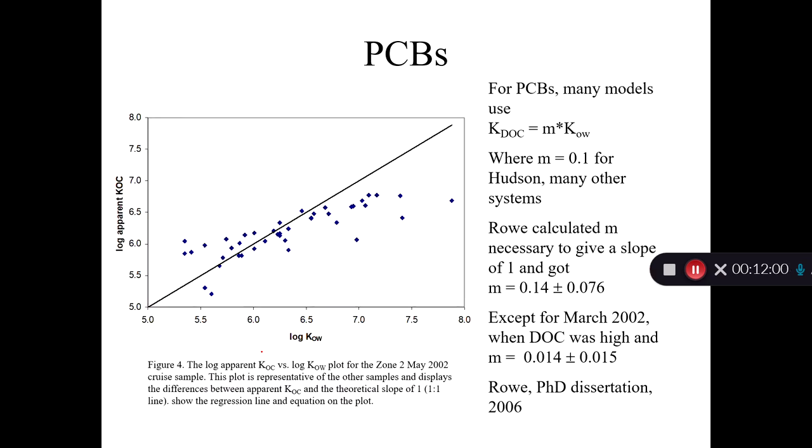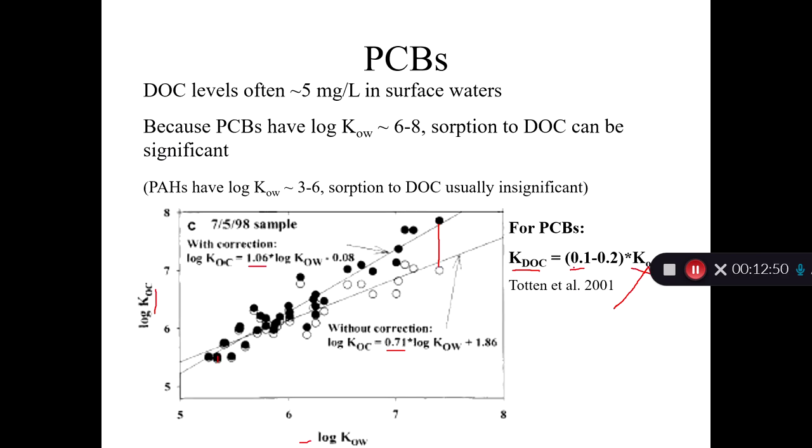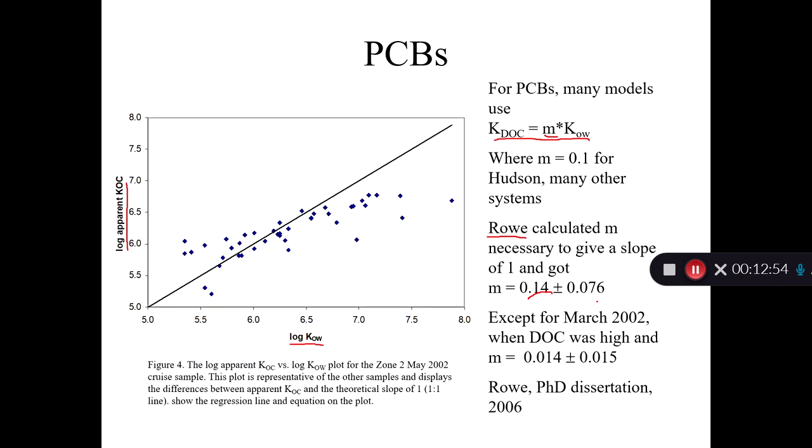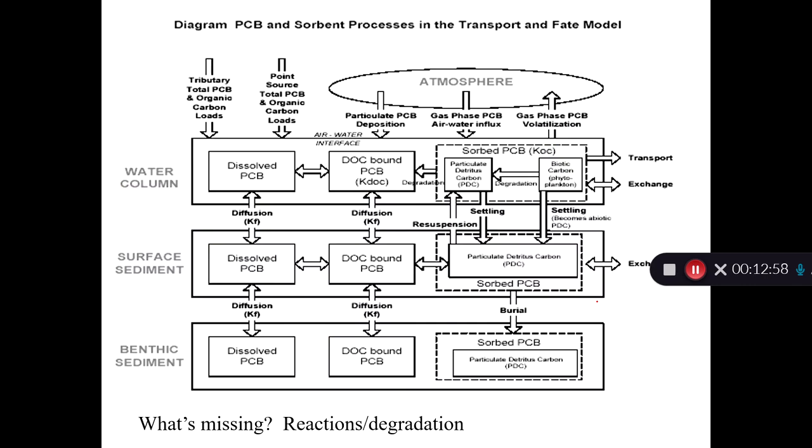So here's another example. This is from the Delaware River. My student, Amy Rowe, she's my first PhD student. Yay, Amy! She's now a county extension agent for Rutgers. She went out and measured these blue symbols. So that's the log of the apparent KOC value, plotted versus log KOW. And you can see the black line is the one-to-one line. And you can see her data doesn't really fall on the one-to-one line. So what she did is she kind of did this experiment backwards and she said, okay, let's assume that KDOC is equal to some correction factor M times KOW. And she said, okay, well, what does M have to be in order to get the slope here to be equal to one? And she got an M value of 0.14. So that's a pretty good corroboration of our guess here that the correction factor was about 0.1 or 0.2. So that's reasonable.